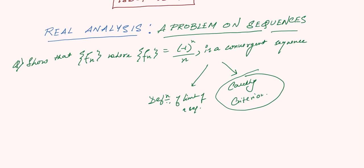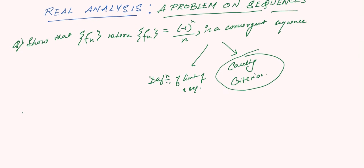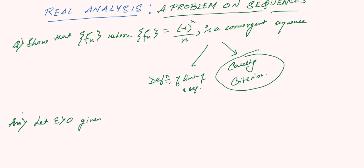So the solution should be in this form: Let epsilon be greater than 0. This is given. And let n be strictly greater than m.